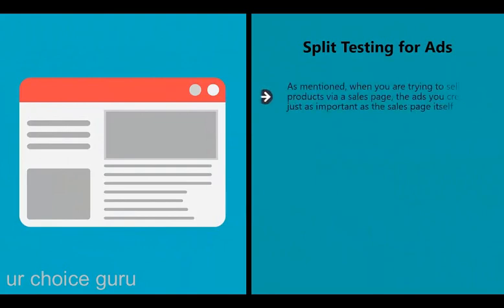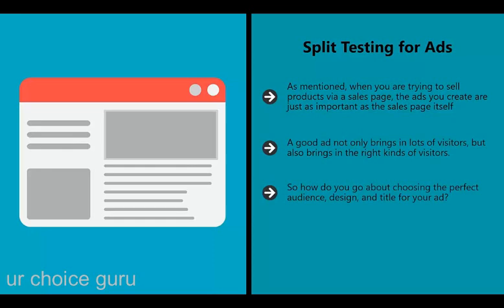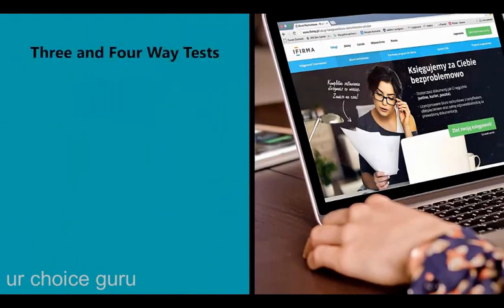When trying to sell products via a sales page, the ads you create are just as important as the sales page itself. You need to make sure that when someone lands on your page they find something that interests them. A good ad not only brings in a lot of visitors but brings in the right kinds of visitors. How do you choose the perfect audience, design, and title for your ad? One answer is to use something called AdWords Experiments, offered by Google itself by default. This way you can test which combination of factors works best and hone the ideal sales funnel.